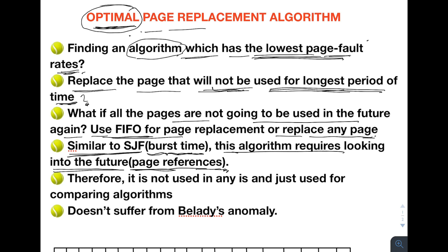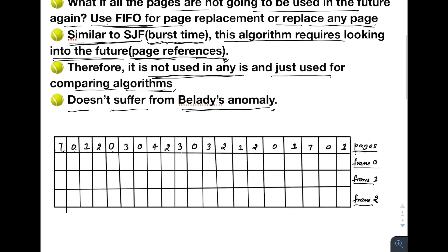Because optimal page replacement requires looking into the future, it is not used in any operating system — you simply cannot implement it, since the kernel does not know the future page references of a process. It is only used for comparing different page replacement algorithms. You find the page fault rate for optimal, then for other algorithms, and whichever comes closest to optimal is considered the best. One good thing: this algorithm does not suffer from Belady's anomaly, unlike FIFO.